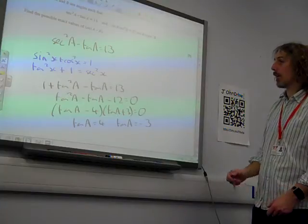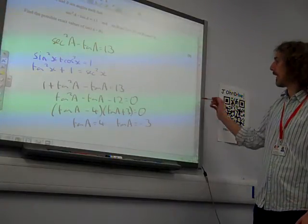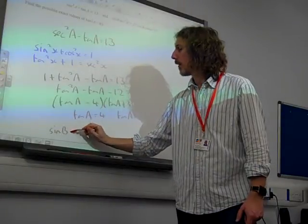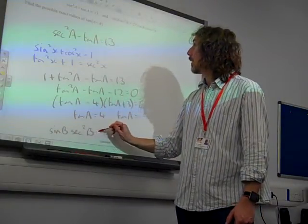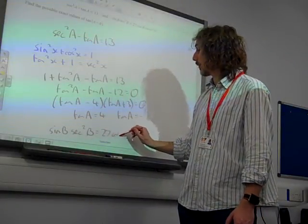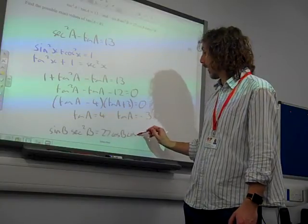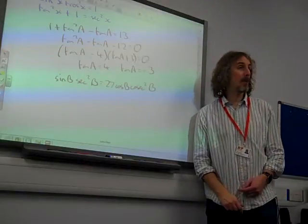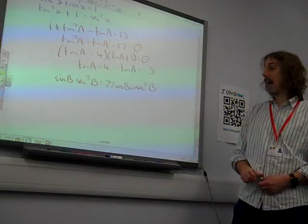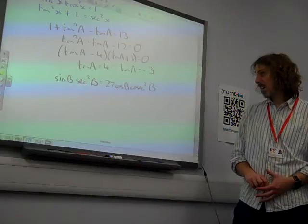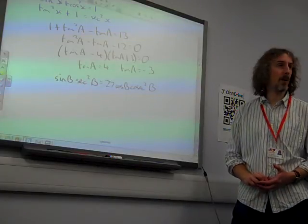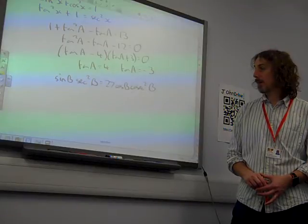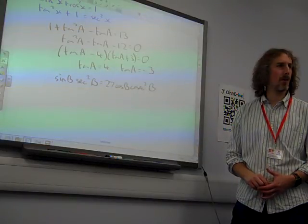Let's look at the other one. Sin B sec²B is 27 cos B cosec²B. Alright. I need to end up with that in terms of tan. There looks to be all sorts of stuff going on all over the place with that. Let's see if we can write it just in terms of sin and cos for a little while.